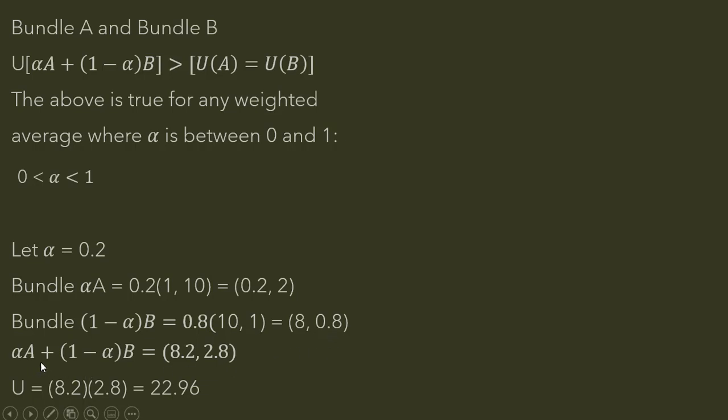And now we do the math here, just adding these values up. 0.2 plus 8 is 8.2, and 2 plus 0.8 is 2.8. Plugging that into our utility function, again, this weighted average provides more utility than the extreme bundle at A or Bundle B.